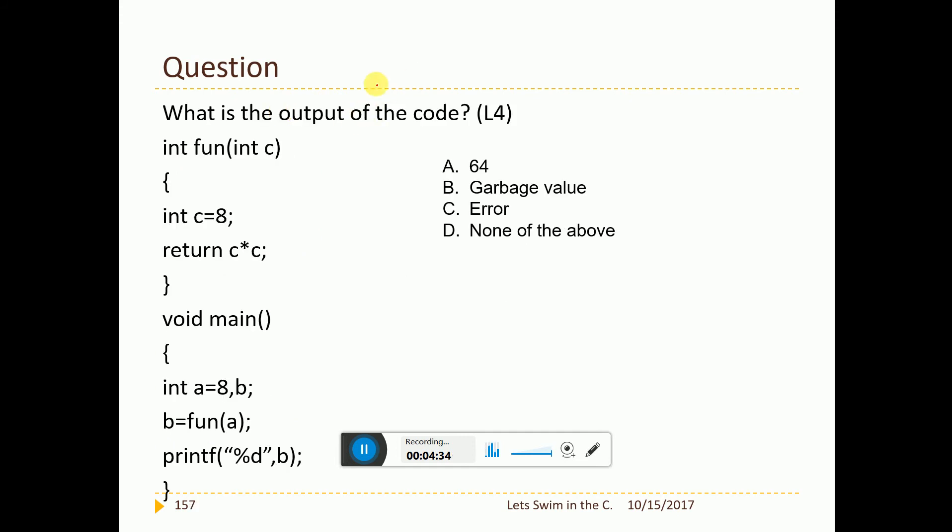Now this is a very important question. See this folks. Int fun int c. I have c equal to 8 written c*c. Now what I am doing? I am just calling fun of a and this goes here. And you see a mistake here. c equal to 8. What is it of type int? What is this c here? This is also c here. And this is also int. You have got the same variable twice and the type has been defined twice again. So this is called redeclaration. It is a bug.